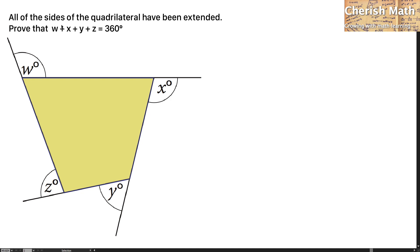Here it is. All the sides of the quadrilateral have been extended. Prove that W plus X plus Y plus Z equals 360 degrees.